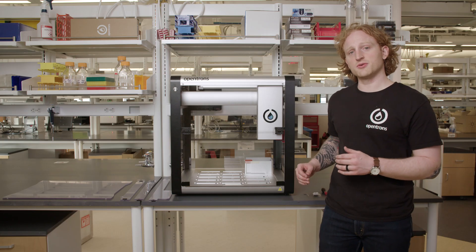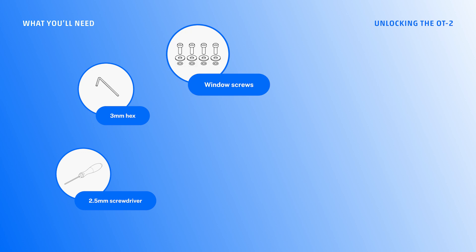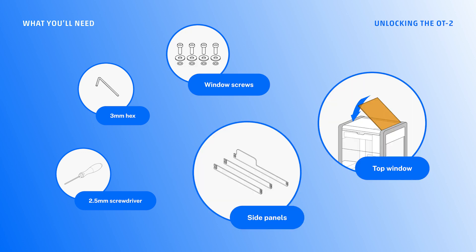For unlocking the OT2, I will need the 3mm hex, the 2.5mm hex screwdriver, the top window screws, and the top window as well as the side panels.